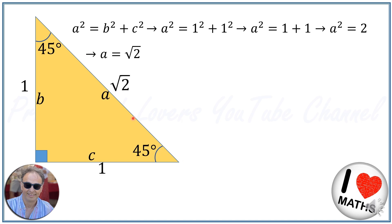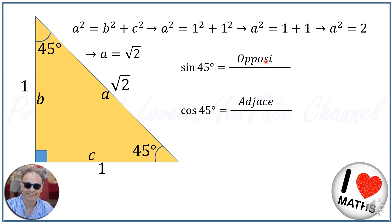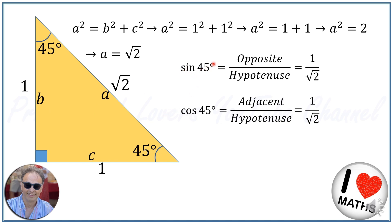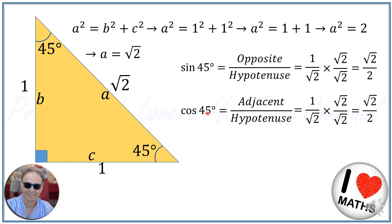Therefore A equals square root of 2, so the hypotenuse of this triangle is square root of 2. For sine and cosine we use the ratios of opposite over hypotenuse and adjacent over hypotenuse respectively. So sine of 45 degrees equals opposite over hypotenuse, which is 1 over square root of 2. Similarly, the adjacent is 1 and hypotenuse is square root of 2, so cosine of 45 degrees is also 1 over square root of 2, which simplifies to square root of 2 over 2.